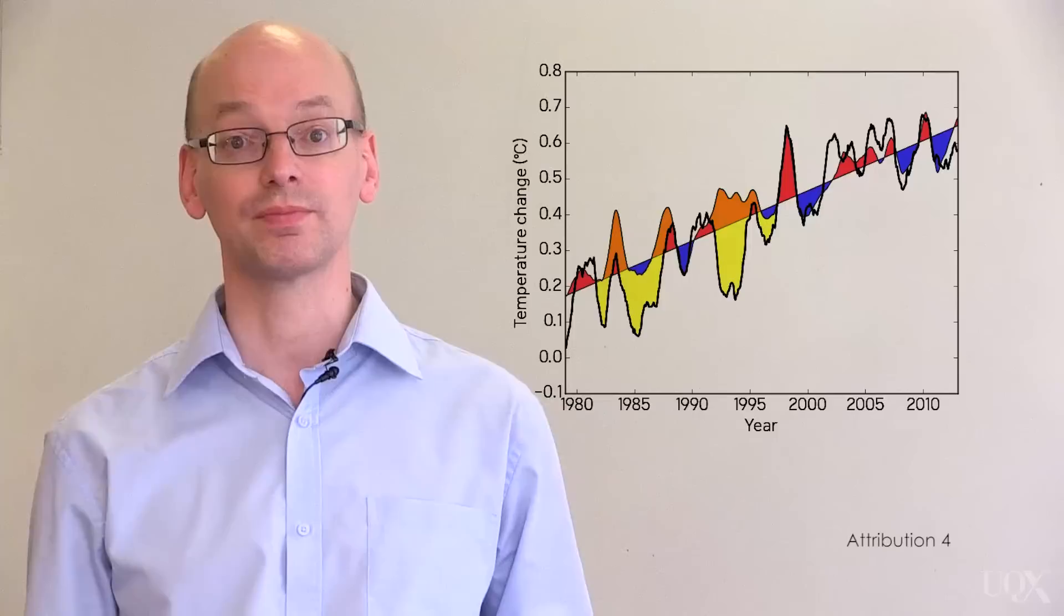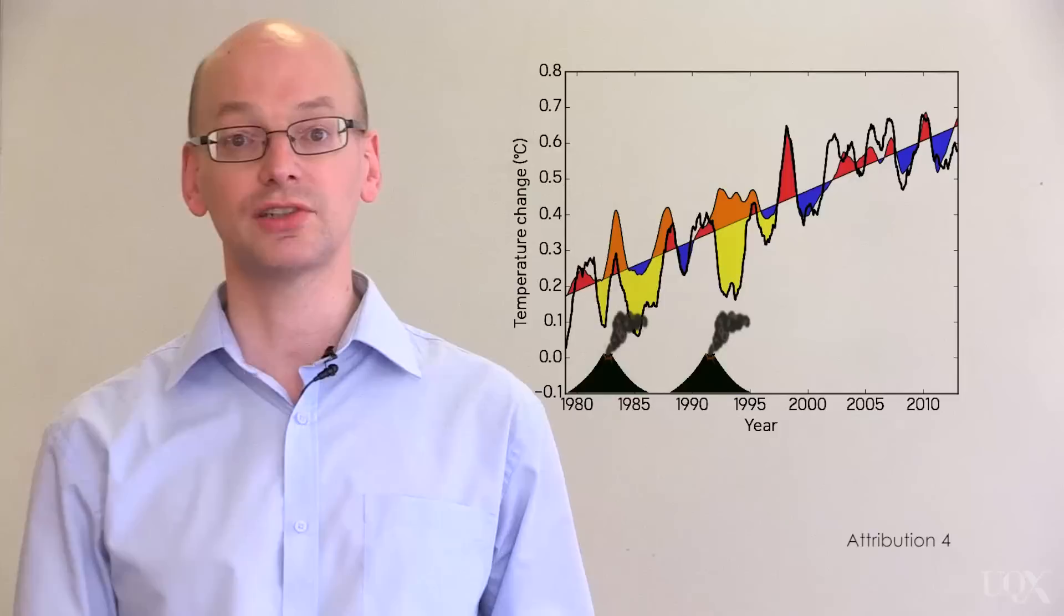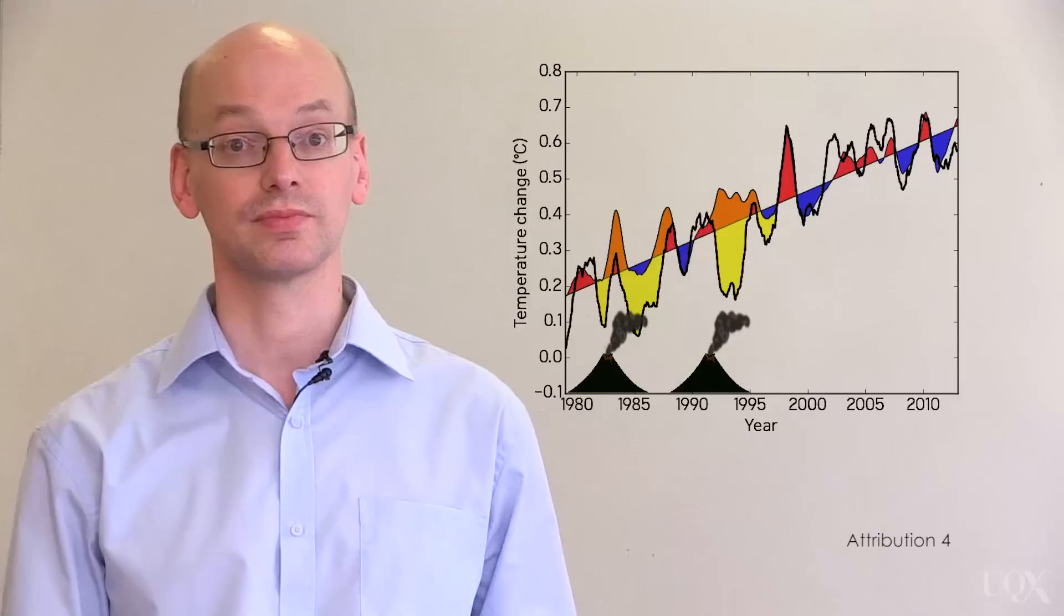However, El Niño doesn't explain everything. There are cooler periods in the early 80s and 90s which don't fit the El Niño cycle. These were caused by two major volcanic eruptions, El Chichon and Pinatubo. Dust from the volcano spread in the upper atmosphere, cooling the surface.